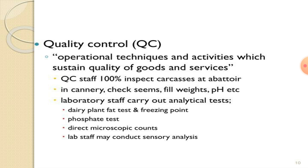In quality control, the operational techniques and activities sustain the quality of goods and services. QC staff 100% inspect carcasses at the abattoir. In cannery, they check scenes, fill weights, pH, etc. Laboratory staff carry out analytical tests. At the dairy plant, fat tests and freezing point tests, phosphate tests, and direct microscopic counts are performed. Lab staff may also conduct sensory analysis.